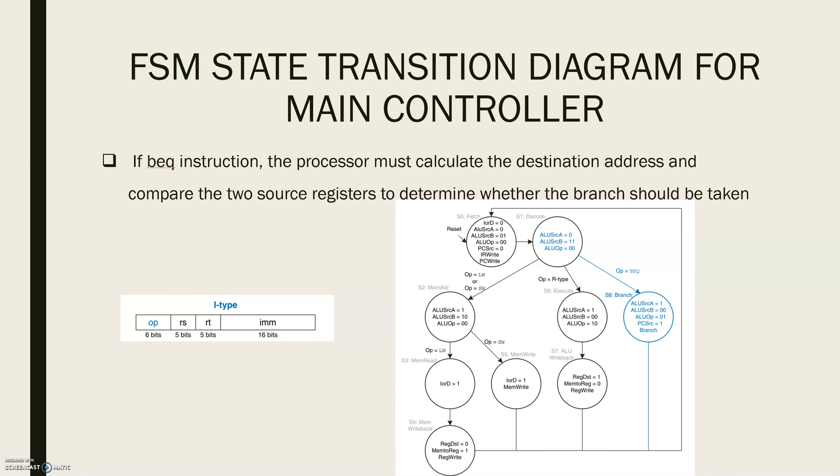For a BEQ instruction, the processor must calculate the destination address and compare the two source registers to determine whether the branch should be taken. This requires two uses of the ALU and hence might seem to demand two new states.